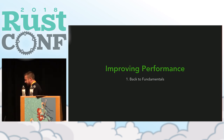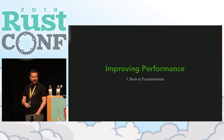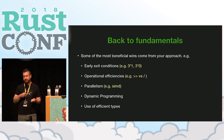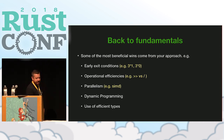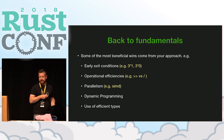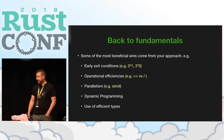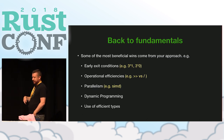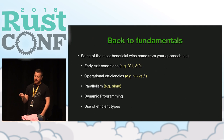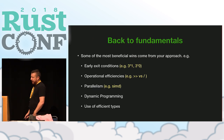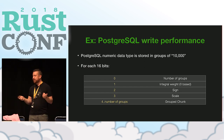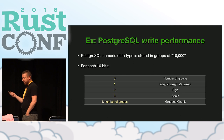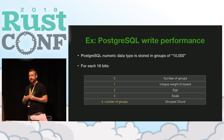Some of the biggest wins come from re-looking at your approach — going back to fundamentals. There are things like early exit conditions, operational efficiencies such as using bitwise shift instead of dividing by a power of two, parallel operations, dynamic programming, and use of efficient types. As a practical example, let's talk about Postgres write performance. Postgres has a numeric data type, and to write to the Postgres protocol, you need to break a number into groups of 10,000, then write out the number of groups, the weight of the integer portion, sign, scale, and the groups.